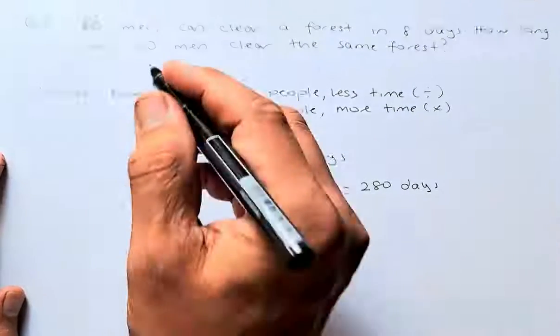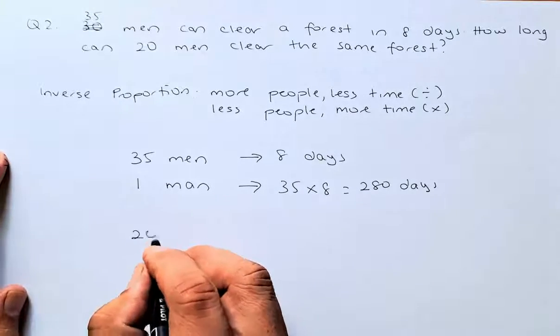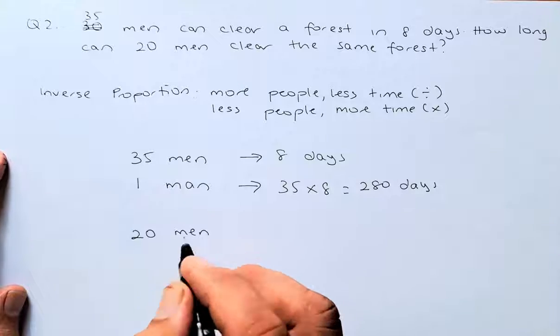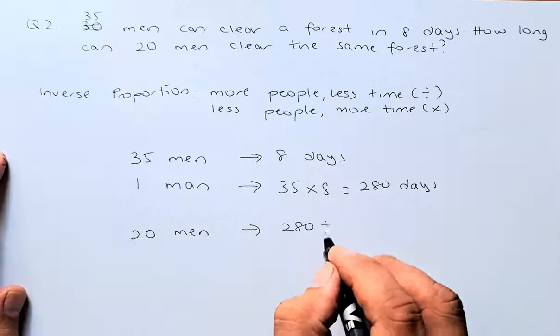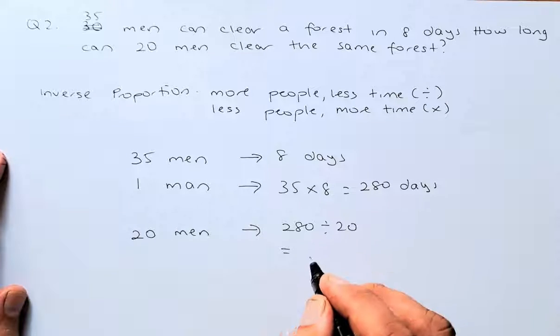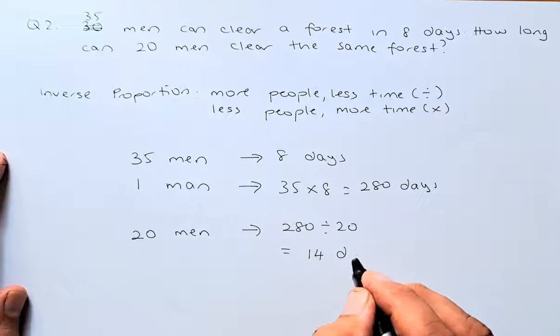And now we have 20 men now. From 1 man to 20 men is more men. So we are going to divide this time. So it's going to be 280 divided by 20 and the answer is going to be 14 days.